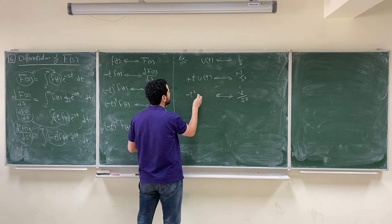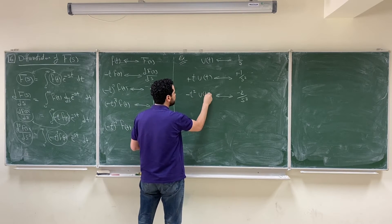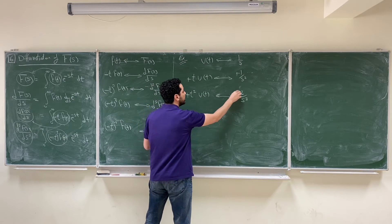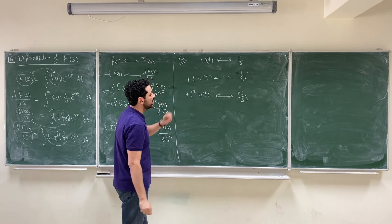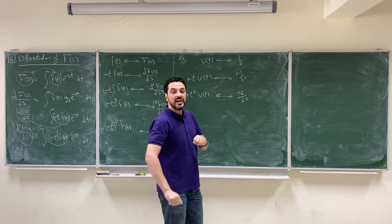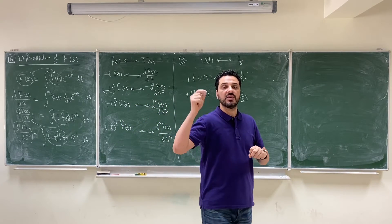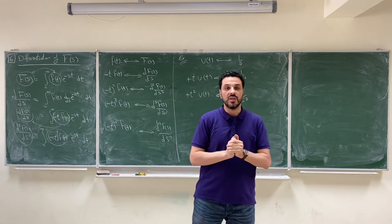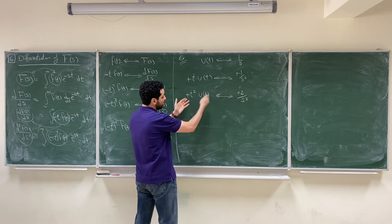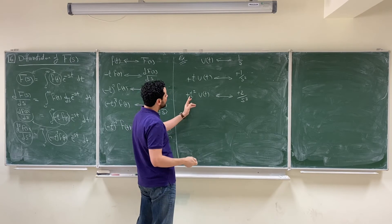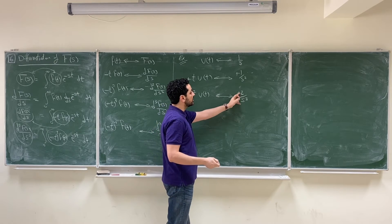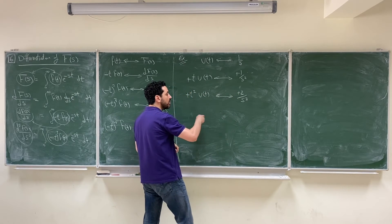We get -t²·u(t) in the time domain, and again the negatives cancel. So t²·u(t) has a Laplace transform of 2/s³. This is consistent with the example we solved in the last video using the integration property, where we found that t²·u(t) has a Laplace transform of 2/s³.